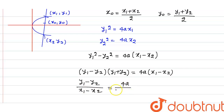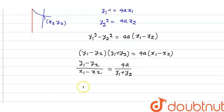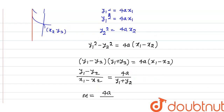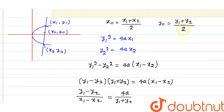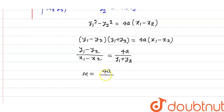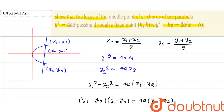Applying the difference of squares property, we get (y1 - y2)(y1 + y2) = 4a(x1 - x2). Rearranging, the slope m = (y1 - y2) / (x1 - x2) = 4a / (y1 + y2) = 4a / 2y0 = 2a / y0.